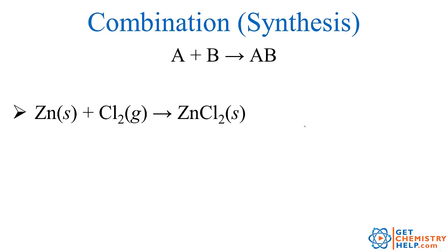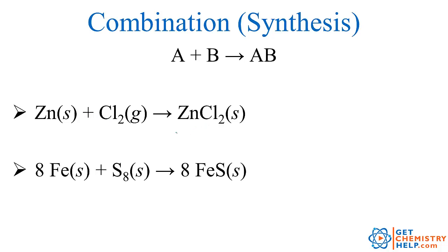Let's go through a few examples of each of these five types. The first general type is combination — two or more things combining to make one new substance. Here we have zinc plus chlorine combining to make zinc chloride. Here's another one: iron combines with sulfur to make iron 2 sulfide. So two or more substances combining to make a new substance.